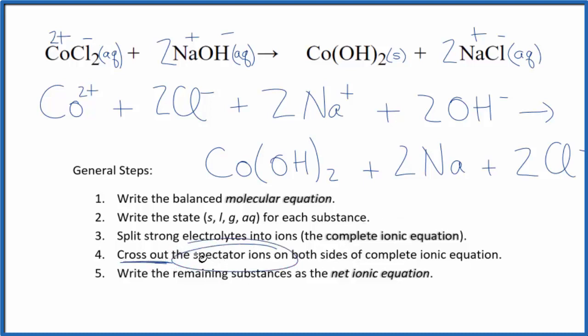Now we can cross out spectator ions. They're ions that appear on both sides of the equation. They really don't change. They're the same at the beginning and the end. So we're just going to ignore those. We're going to cross those out.